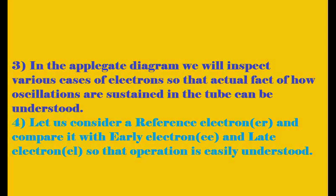Let us inspect the Applegate diagram for various cases: the early electron, reference electron, and late electron, all under the influence of RF voltage induced in the cavity. The oscillations induced due to noise or transients should have died out, but they are sustained in the tube. We will see how this happens by analyzing the Applegate diagram.